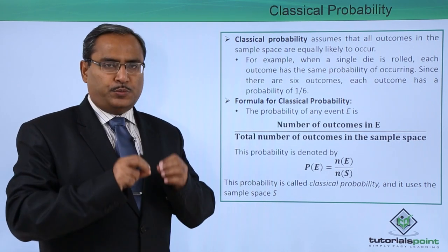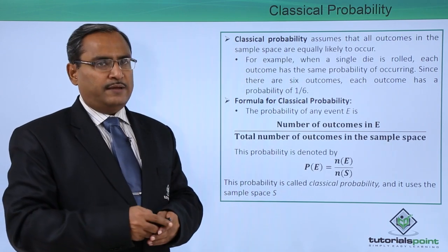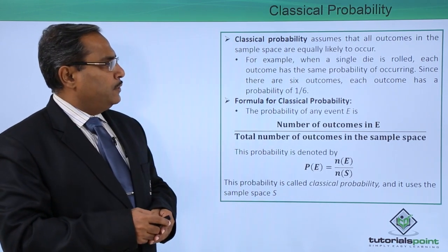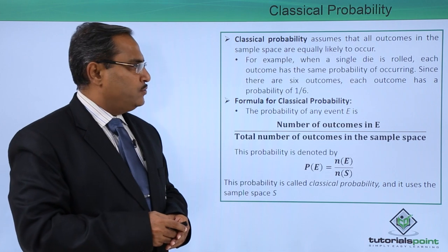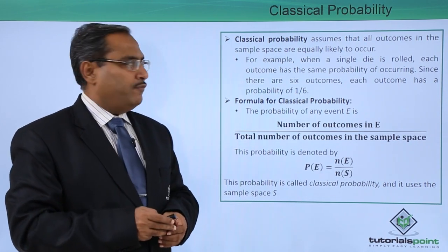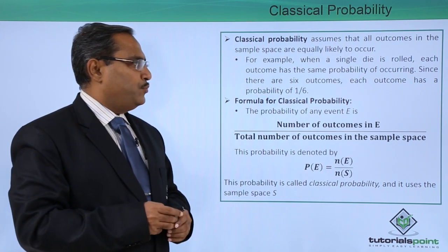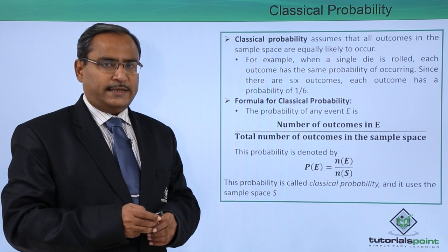That means all the possible outcomes are equally probable to occur in our real life scenario. For example, when a single die is rolled, each outcome has the same probability of occurring. Since there are 6 outcomes, each outcome has the probability of 1 by 6.